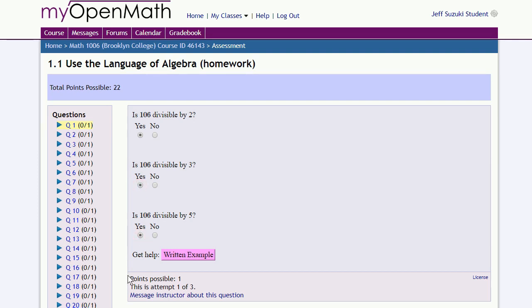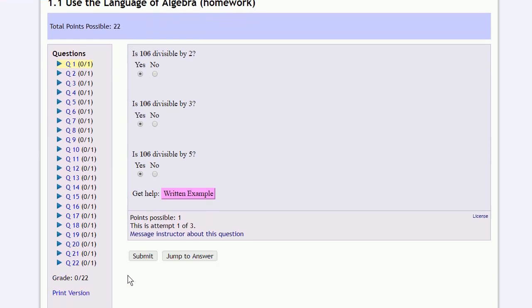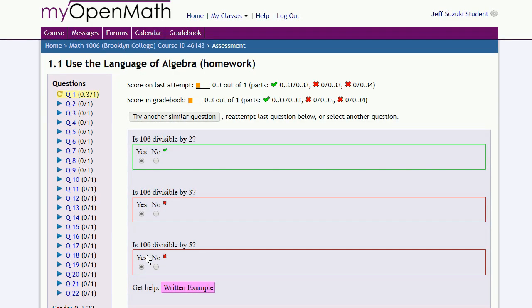Now once you've done that, scroll down to the bottom of the screen. And if you think you've answered the question correctly, click on submit. And you'll get your grade on the question. And we didn't do so well.